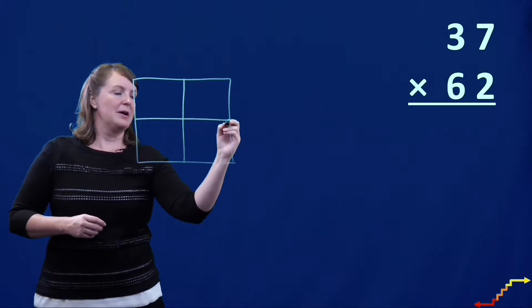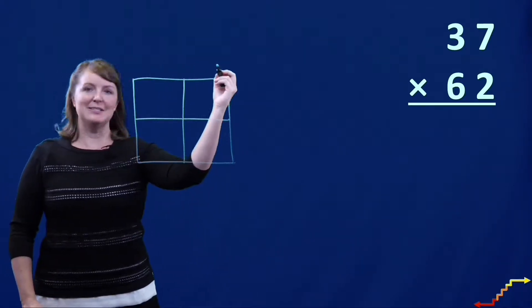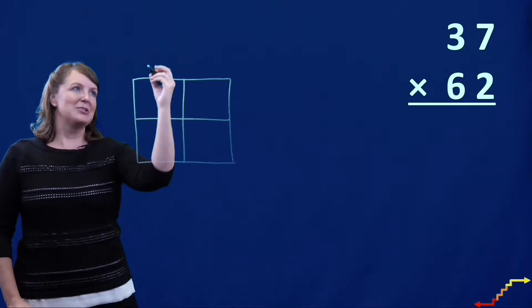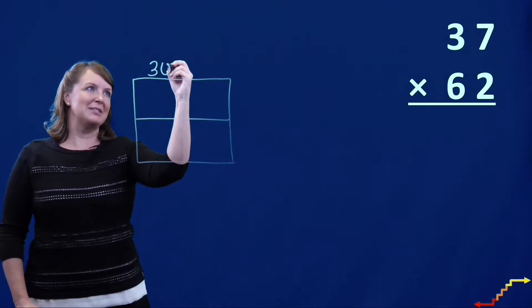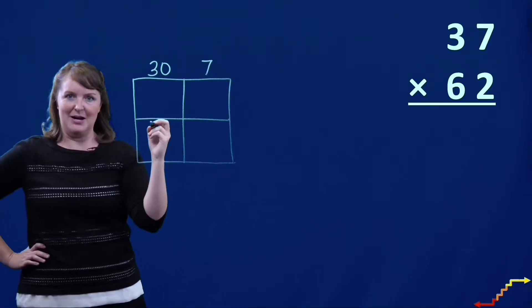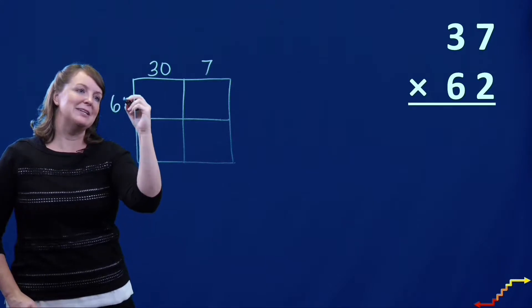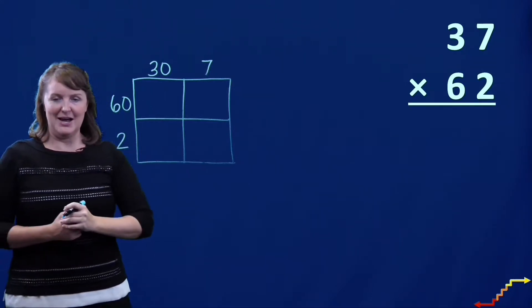All right. Now, I'm going to multiply 37 times 62. So I'm going to write 37 in expanded form right here at the top, and then I'm going to write 62 right here along the side.